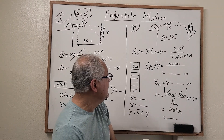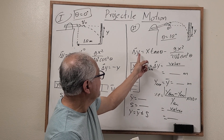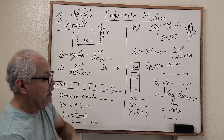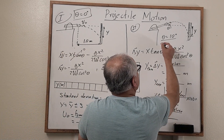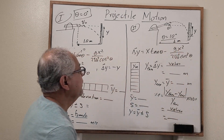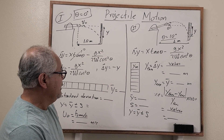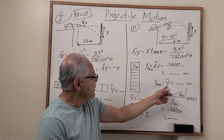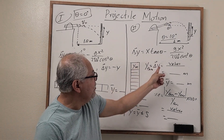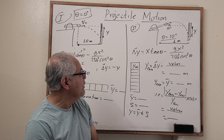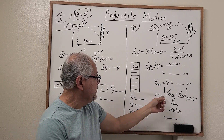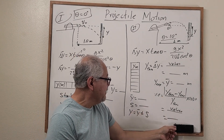For case two with 10 degrees, the distances are more clustered than case one. The formula is the same, with x equal to one meter — we are only changing the angle. Take the average as the experimental value for y, and from the formula calculate delta y as the theoretical value. Then compare these two using percent error.